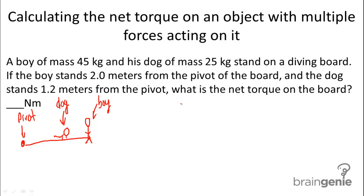Now, what we need to do is, since they're both standing on the same side of the pivot, they're both applying torques downwards in the same direction. So to figure out the net torque, all we need to do is add up the individual torques for the dog and for the boy.